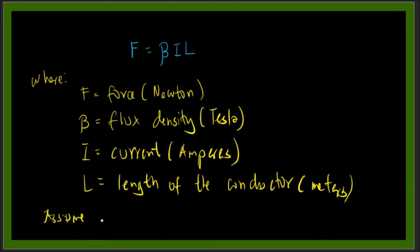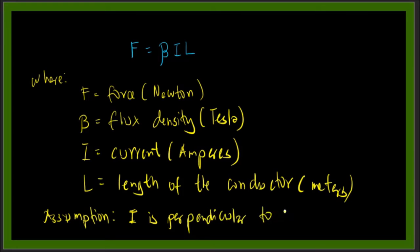In this formula we will assume that the direction of the current is perpendicular to the magnetic field — or you could say perpendicular to the magnetic flux — so the angle between them is 90 degrees. This is the formula under that assumption.